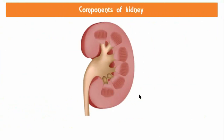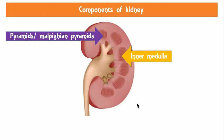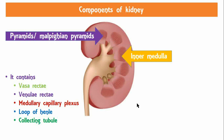The renal medulla is the innermost part of the kidney, split into sections known as renal pyramids or Malpighian pyramids, which are cone-shaped tissues. In humans, the renal medulla is made up of 10 to 18 of these conical subdivisions. The broad base of each pyramid is in contact with the cortex and the apex projects into a minor calyx. The renal medulla contains structures of the nephrons responsible for maintaining salt and water balance, including small arteries called vasa recta, small veins called venulae rectae, the medullary capillary plexus, the loop of Henle, and the collecting tubule. The renal medulla is hypertonic to the filtrate in the nephron and aids in the reabsorption of water.